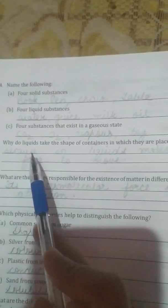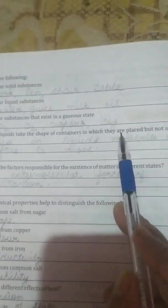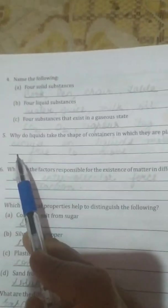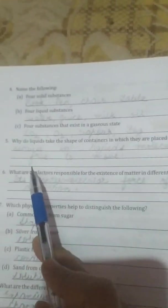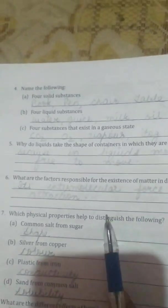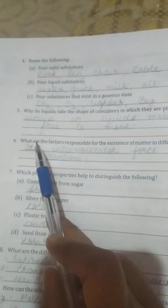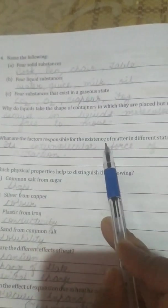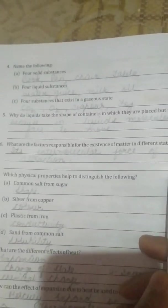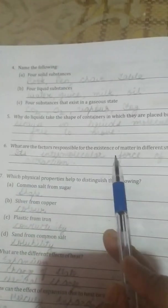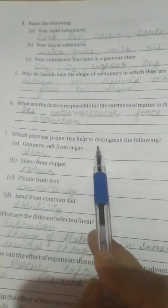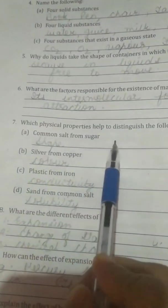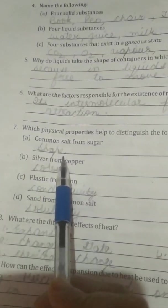Fifth, why do liquids take the shape of the container in which they are placed but not solid? Because in liquid, molecules are free to move as compared to the solids. Sixth question, what are the factors responsible for the existence of matter in different states? Its intermolecular force of attraction.